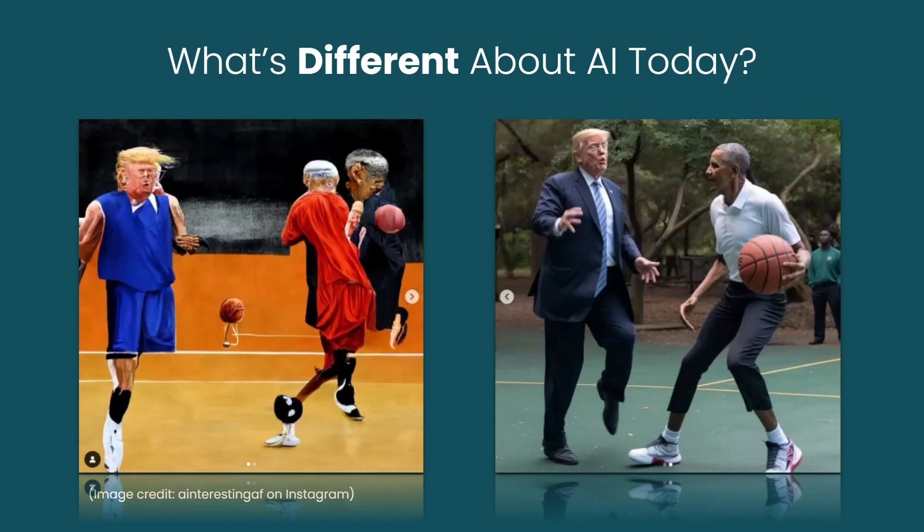And of course it's still not perfect. For example, the basketball, if you look at it closely, it's a little too big and it has too many lines on it. So the AI got a little confused about exactly how a basketball looks.